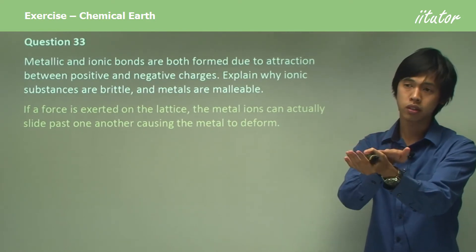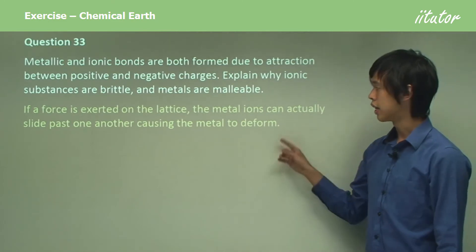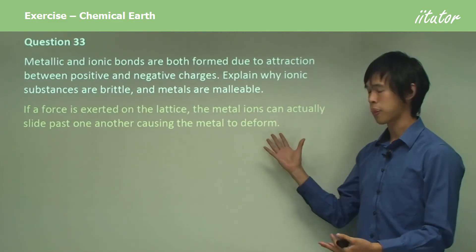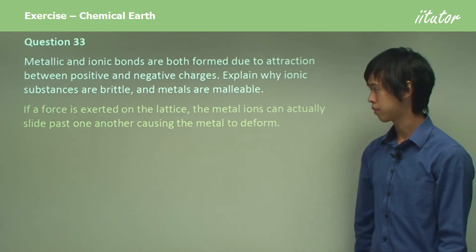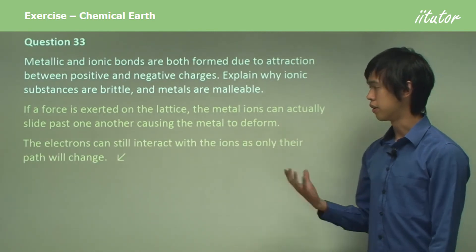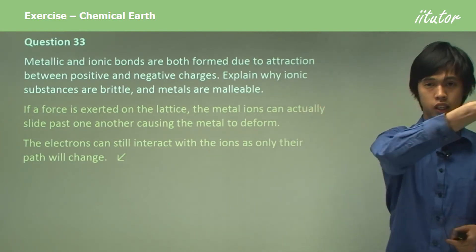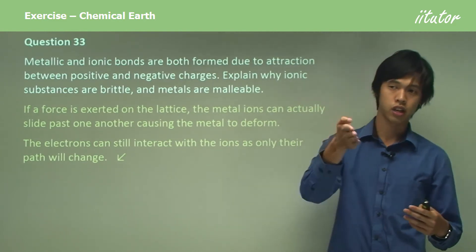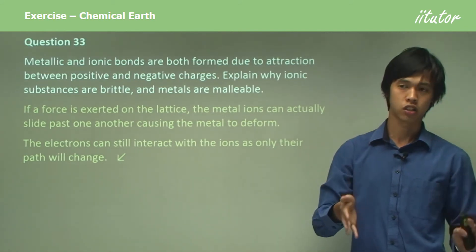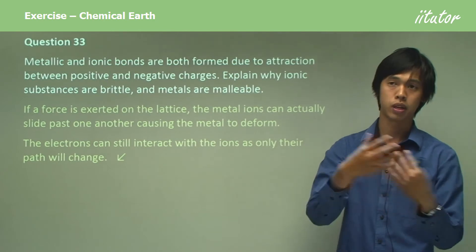So the metal ions in the lattice can actually be pushed across one another, causing the metal to deform, which makes the metal change shape. The electrons can still interact with the ions — only their path will change. So instead of going straight, maybe they might take a left, or they might have to go downwards or upwards. So their path changes, but they still are interacting with the metal lattice.